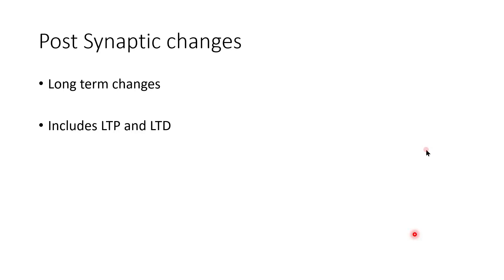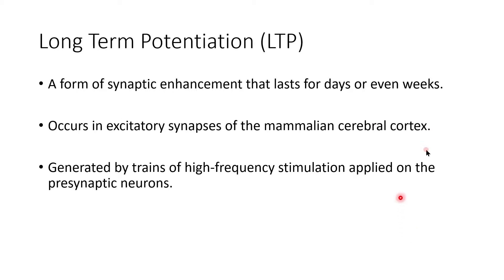Moving on to post-synaptic changes, which are long-term changes occurring at the post-synaptic terminal, these include LTP and LTD — long-term potentiation and long-term depression. Long-term potentiation is a form of synaptic enhancement that lasts for days to even weeks. It occurs at the excitatory synapses of the mammalian cerebral cortex and is generated by a train of high-frequency stimulation applied to the pre-synaptic neurons.